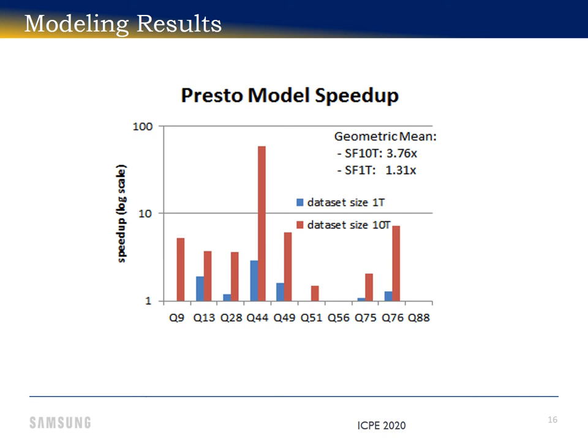This is the only slide that quotes a scale factor 1TB dataset; the rest of the presentation only talks about the 10TB. This increase in speedup is a matter of volume — as the amount of data flooding the cluster increases, the higher the benefit of scan, filter, and projection near storage.